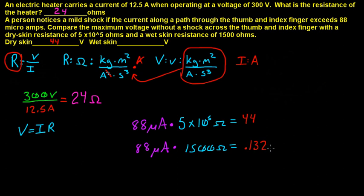0.132 volts. So at this amperage, without feeling this mild shock, the voltage would have to be 0.132 volts with wet skin. Since water is a good conductor of electricity, when your hands are wet, you'll feel the shock much easier than if they were dry. That's how you do these problems.